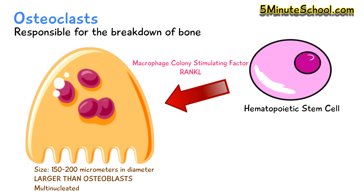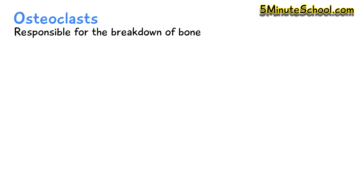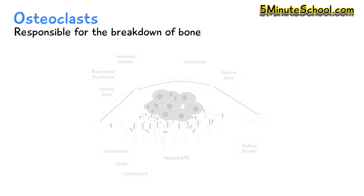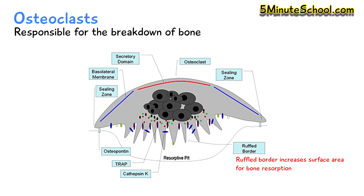Osteoclasts can be found in small pits in the bone surface called Howship's lacunae. When osteoclasts are breaking down bone, they form a special membrane layer called the ruffled border, which is the surface opposite to the bone surface it's breaking down. The folds in the ruffled border increase the surface area for bone resorption.